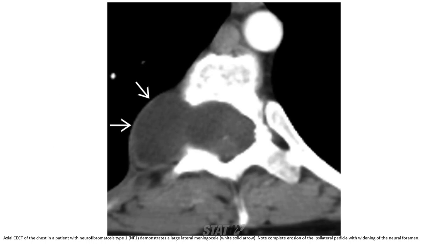This is a contrasting CT of the chest in a patient with neurofibromatosis, reconstructed to show the large lateral meningocele. Note the complete erosion of the posterior lateral cortical vertebral body, and the widening of the neuroforamen.